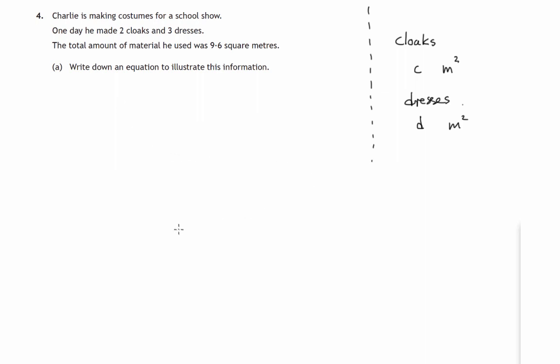So we have to clearly state what these letters mean. So let C be the area of cloak material, that's meters squared, and D square meters be the area of dress material that he uses.